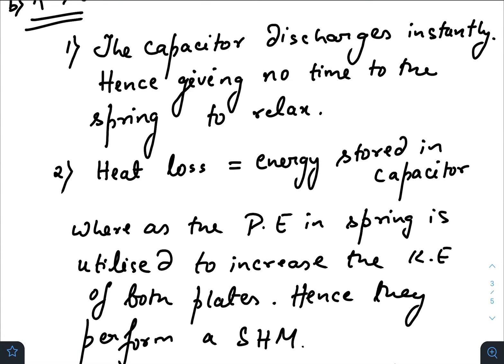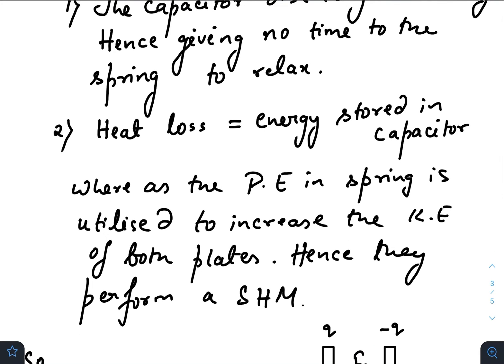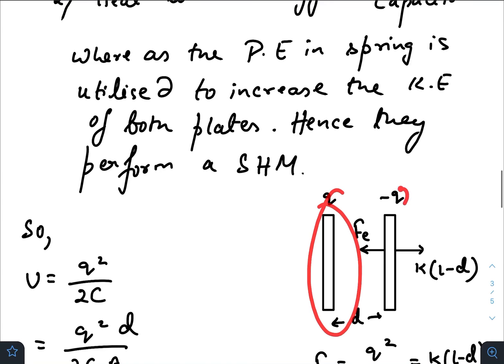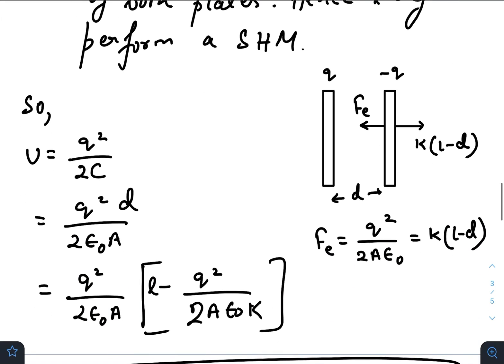Basically, the heat loss will be nothing but the energy that was stored inside the capacitor. The potential energy that was stored inside the spring would be totally transferred to both the two plates. Hence these two plates will gain some kinetic energy and eventually they will perform a simple harmonic motion. In the second case, the total energy that has been dissipated across the resistance is nothing but the energy of the capacitor, because after that there will be no charge and there will be no pulling force between the two plates, so the two plates will perform a SHM.